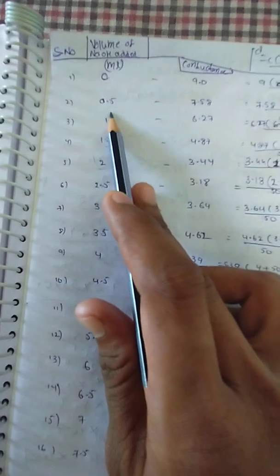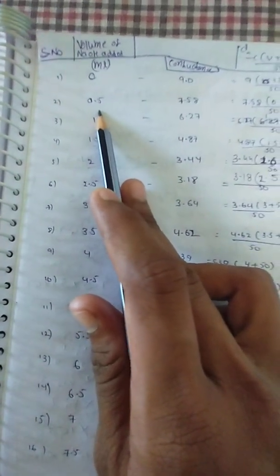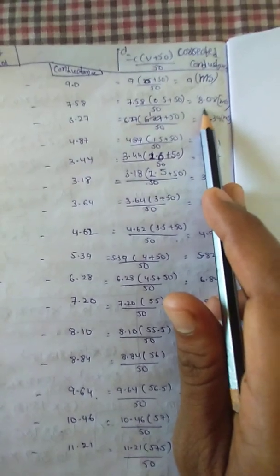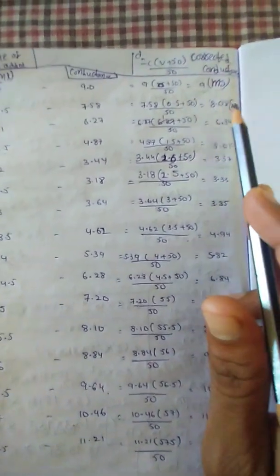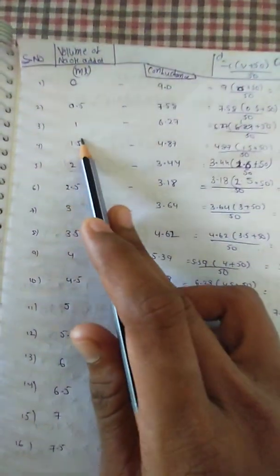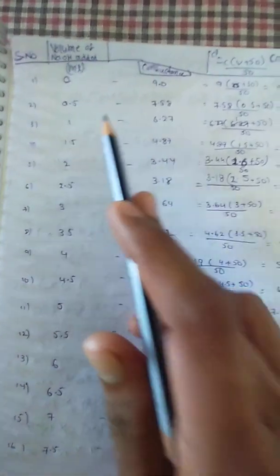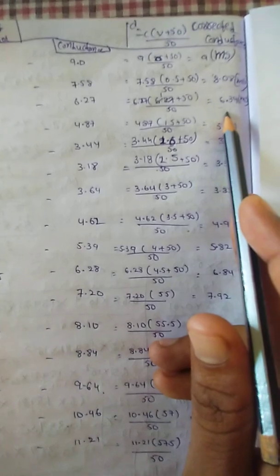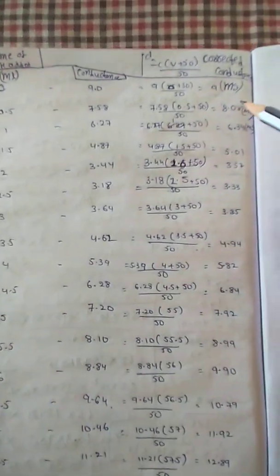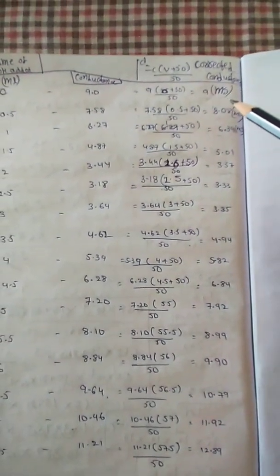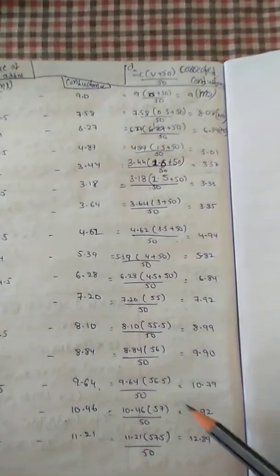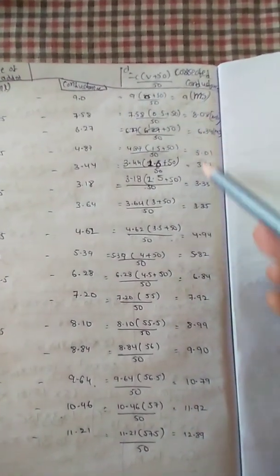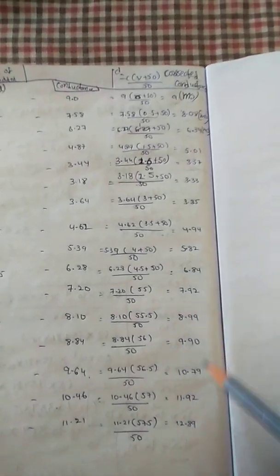Similarly, when 0.5 ml of sodium hydroxide is added, the obtained corrected conductance is 8.08 mS. When 1 ml of sodium hydroxide is added, the obtained corrected conductance is 6.39 mS. Similarly, all the corrected conductance values are determined.